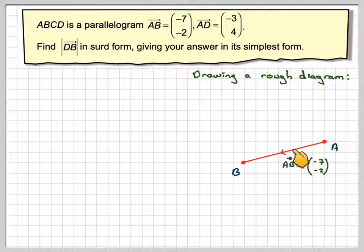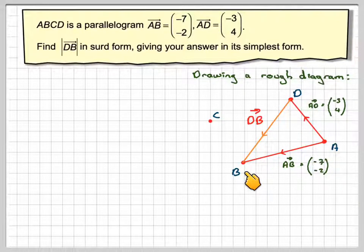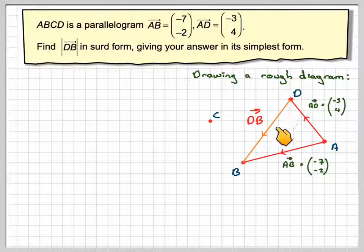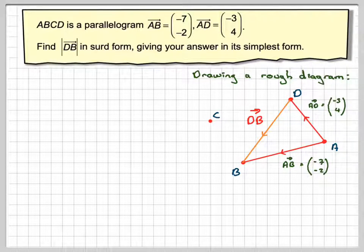And AD will be back 3 and up 4, which will take it to that point there. We are being asked to find, first of all, before we find the magnitude of DB, we need to find what this vector is. And obviously the point C would be here, which is back 3 and 4 up from here, or if you like, 7 along and 2 down from here.